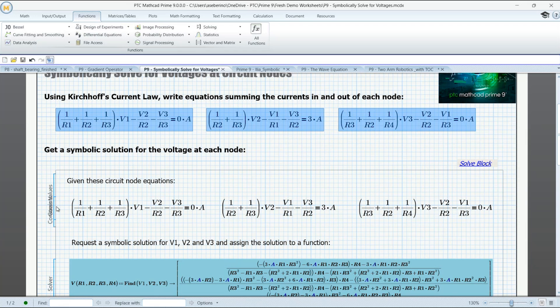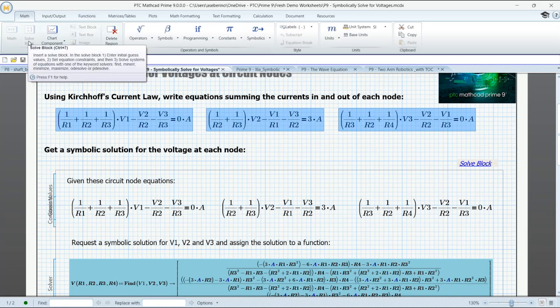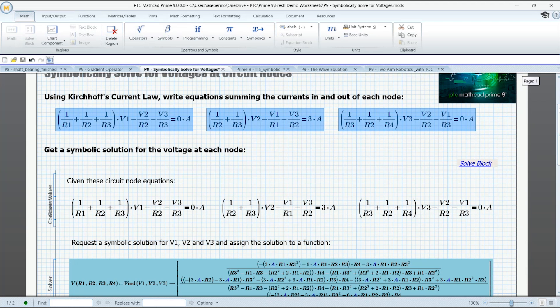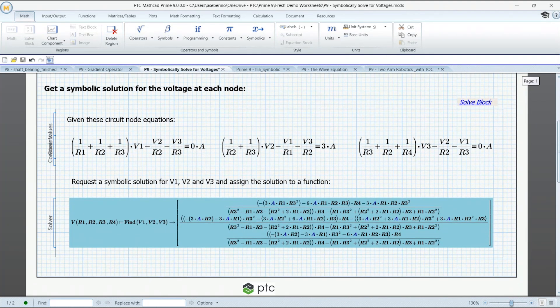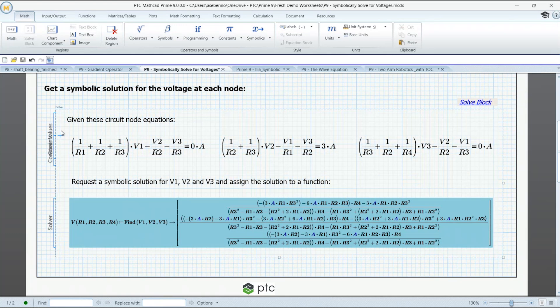So here's the solve block. So this solve block, if you follow my cursor, I'm just tracing the perimeter of it. This solve block is added by clicking on this solve block button. And so now inside the solve block, we're going to define our design constraints. And our design constraints are these three node voltage equations.